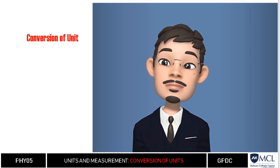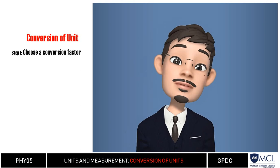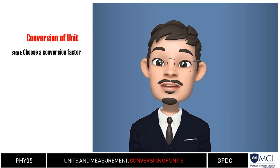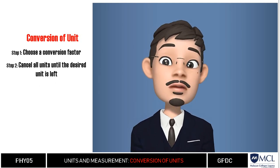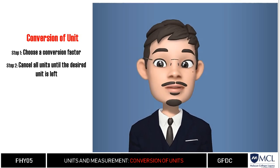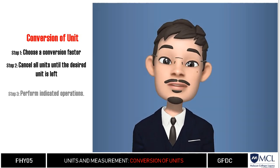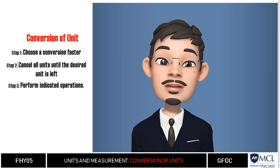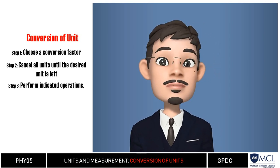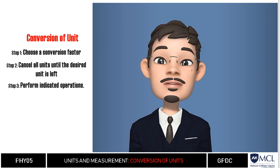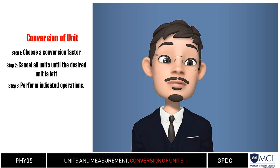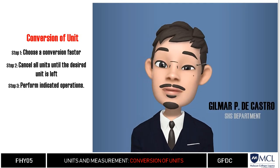To sum up, convert units using three simple steps: first, identify the proper conversion factor; second, set up the ratios so all units cancel except the desired unit; and third, perform the indicated operations. Practice drills have been posted in the course portal. Feel free to message for clarification or post a discussion. This is Guilmar de Castro — see you in the next video.